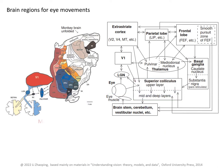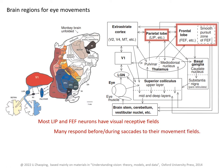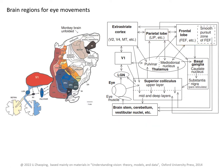Most neurons in areas LIP and FEF have visual receptive fields, and many LIP and FEF neurons respond before or during a saccade towards their movement fields. Movement fields coincide with visual receptive fields for visually responsive neurons. Electrical stimulation of V1, V2, superior colliculus, LIP, and FEF can produce saccadic eye movements towards the receptive field or the movement field of the stimulated neurons.